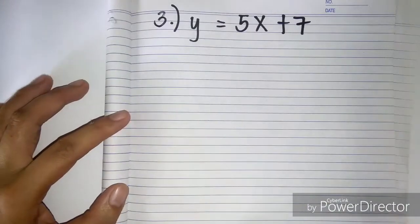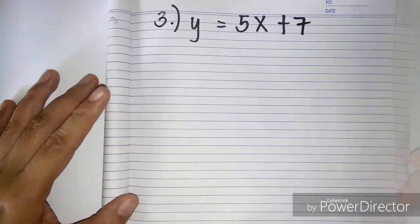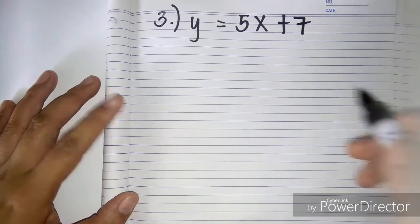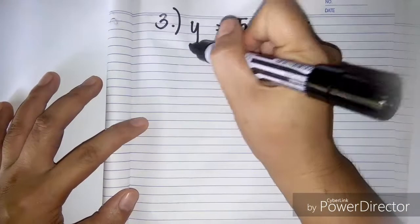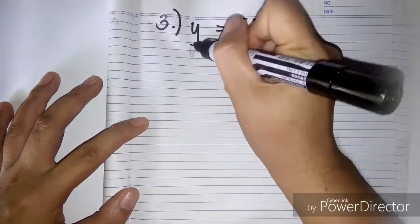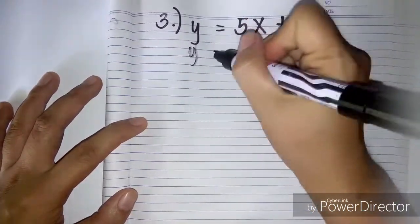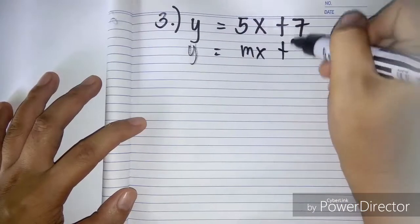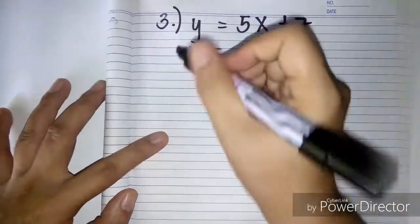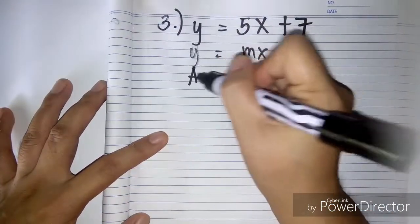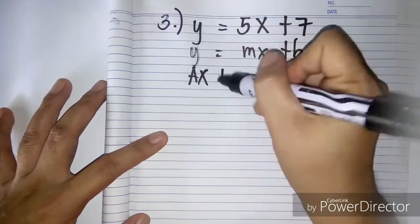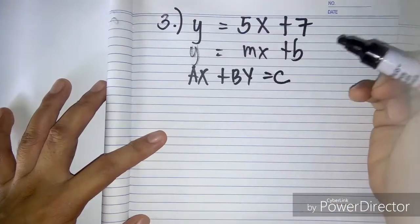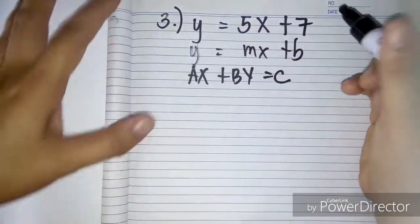Now we have number three: y equals 5x plus 7. Again, we have y equals mx plus b, and we're going to write this into the form of ax plus by equals c.